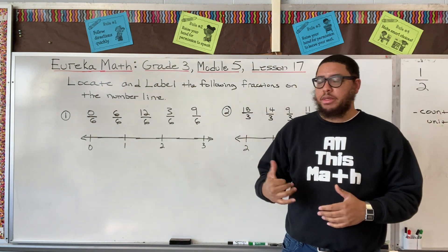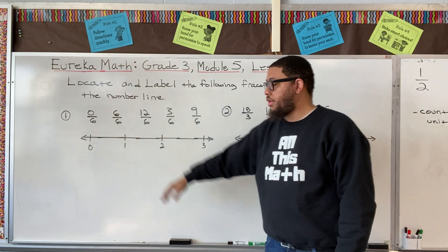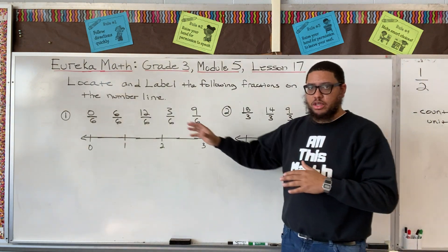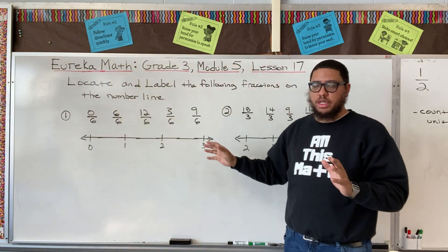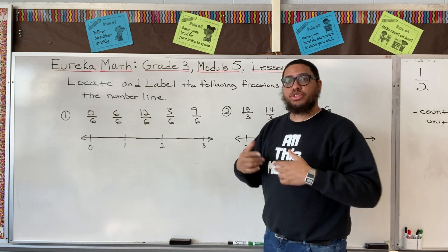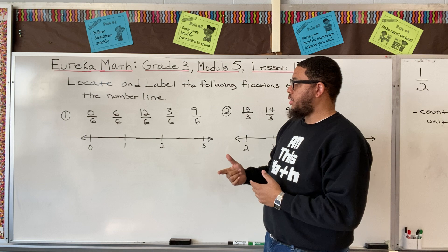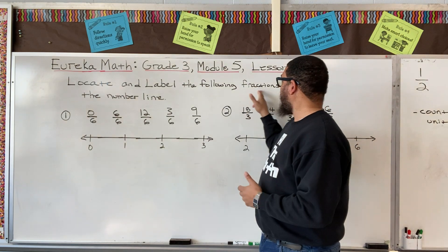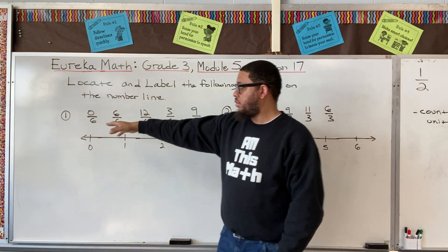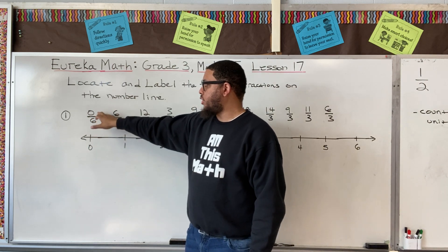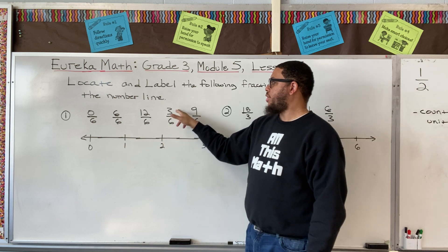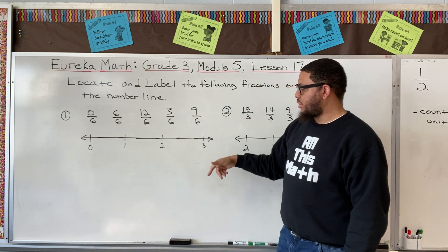I've got two examples behind me — one over here and another over here. The instructions say to locate and label the following fractions on a number line. With number one, we've got a list of fractions: 0 sixths, 6 sixths, 12 sixths, 3 sixths, and 9 sixths.